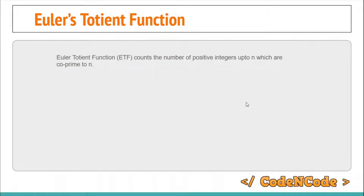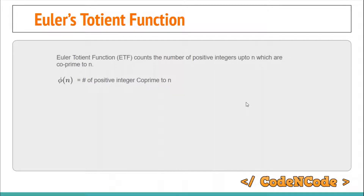Now let's continue. The question is: what is Euler's Totient function? Euler's Totient function counts the number of positive integers up to n which are coprime to n. It is represented by φ(n). φ(n) equals the count of positive integers from 1 to n which are coprime with n — that is, their GCD with n is 1, meaning they share no prime divisor with n.